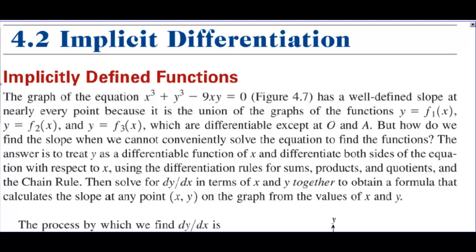Section 4-2, Implicit Differentiation. The graph of the equation x³ + y³ - 9xy = 0 has a well-defined slope at nearly every point because it is the union of the graphs of three separate functions, which are differentiable except at O and A.